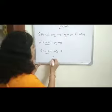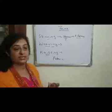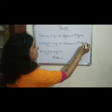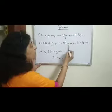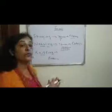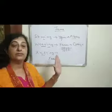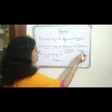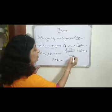Weaving is a process through which yarn can be converted into fabric. In the process of weaving, two sets of yarn are arranged together at right angles to each other to make a fabric. Weaving is done on looms.